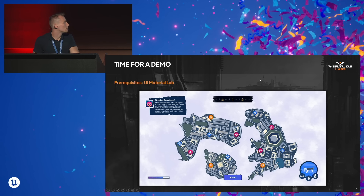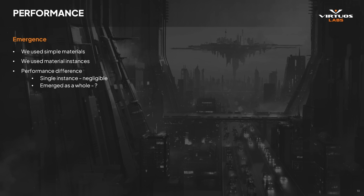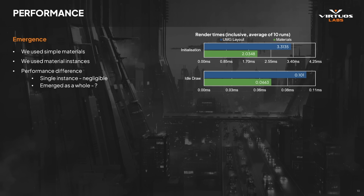The interesting thing is when you actually look at the results of what this accomplishes. We just used a few simple materials and a lot of material instances to create different visuals. If you look at performance from the standpoint of a standalone widget, you are not going to measure any noticeable difference. But when you measure the whole thing as you continuously apply all of these simple principles with materials, you will find very interesting results. We have some render times here — we did 10 runs on each, for both UMG layout and materials, using Unreal Insights to measure it. As you can see, there is about a third performance boost from UMG layout to material layout.